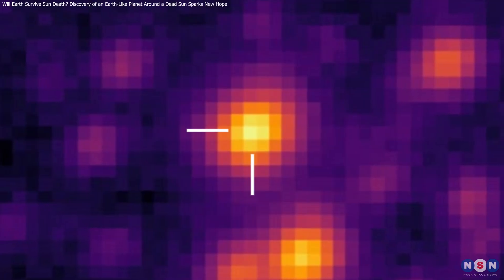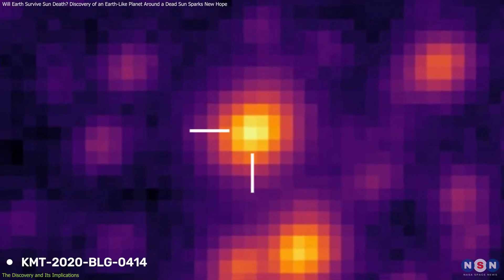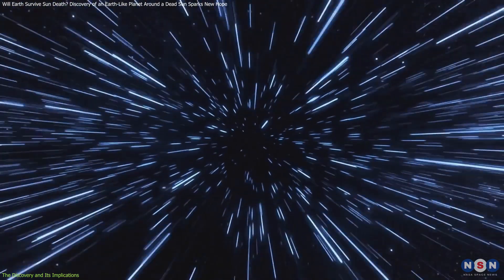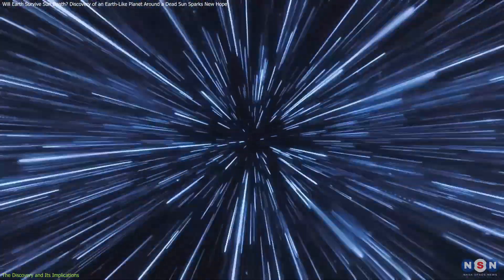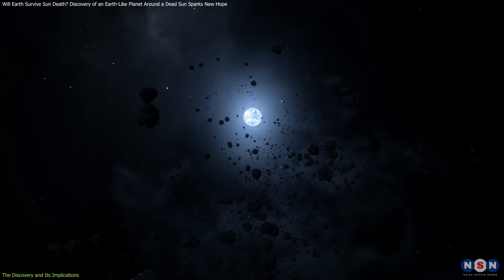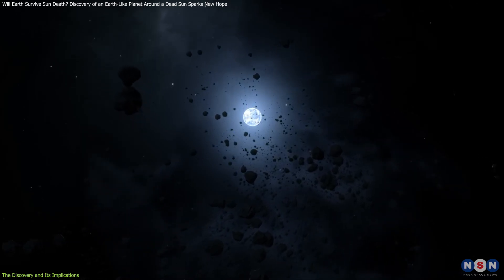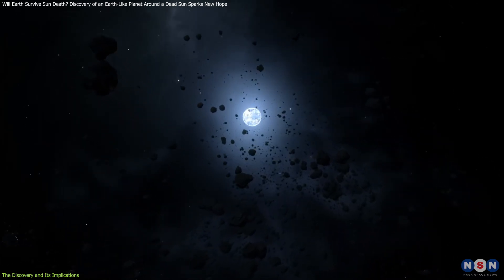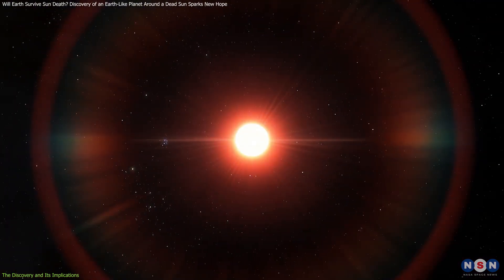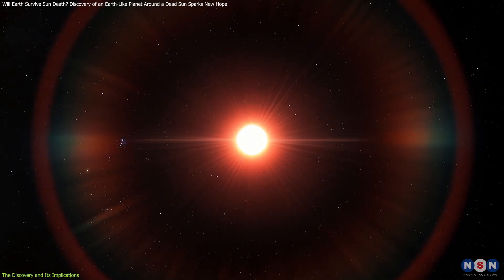This newly discovered system, dubbed KMT-2020-BLG-0414, is located about 4,000 light years away near the dense bulge at the center of the Milky Way. It consists of a white dwarf, a remnant of a once-vibrant sun-like star, an Earth-sized planet, and a brown dwarf, which is a failed star that didn't have enough mass to ignite nuclear fusion.